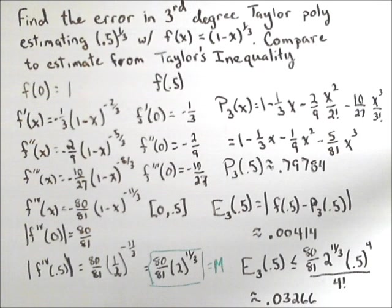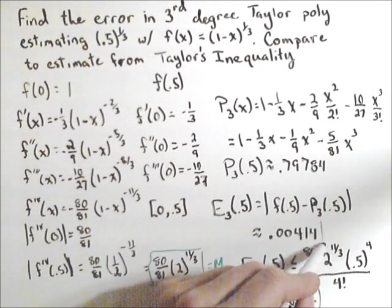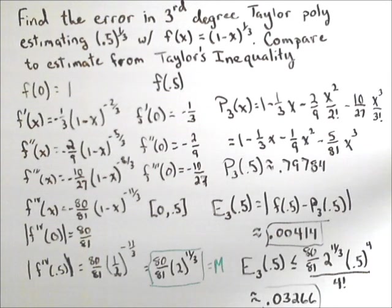And we see that our error bound is greater than our actual error, which is what we expect to have happen.